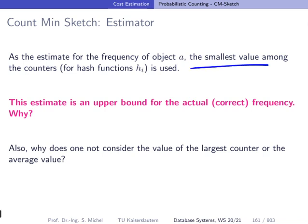So we take the smallest value among the counters we find when we're applying all of the hash functions to the query object. And as mentioned, this estimate is an upper bound for the true, for the correct frequency. And as mentioned, it doesn't make sense to take any larger value, for instance, the largest or the average.